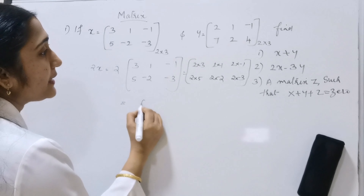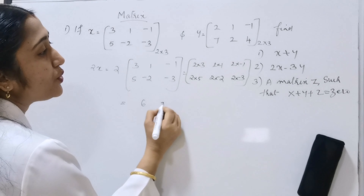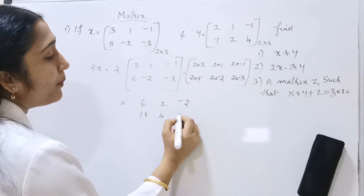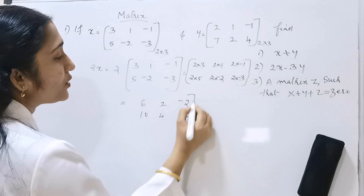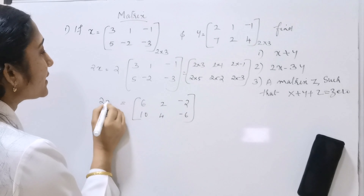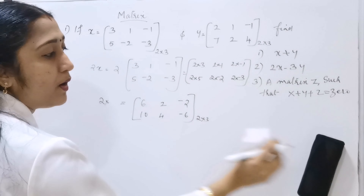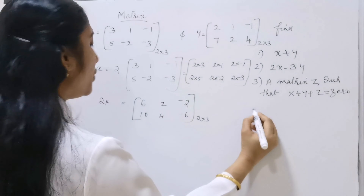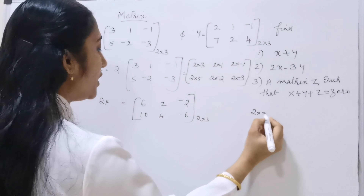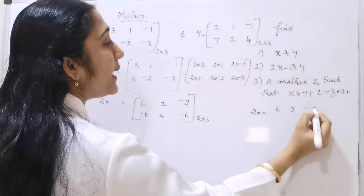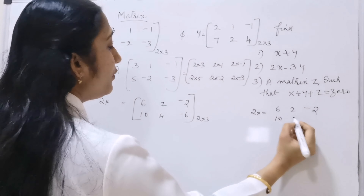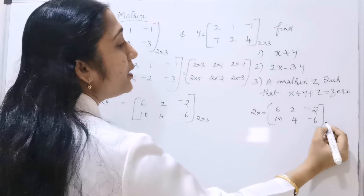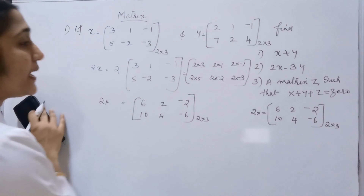So 2X equals [6, 2, -2; 10, -4, -6]. This is the 2X matrix of order 2 by 3.